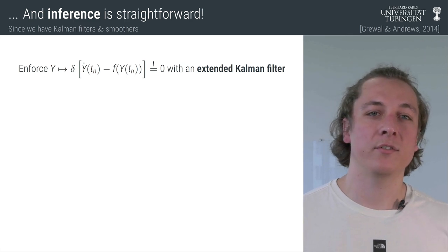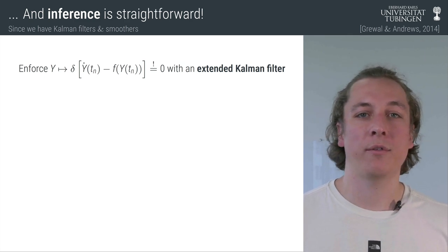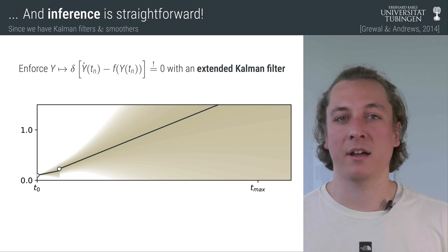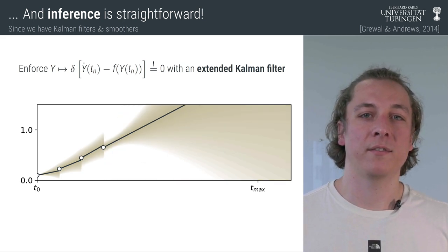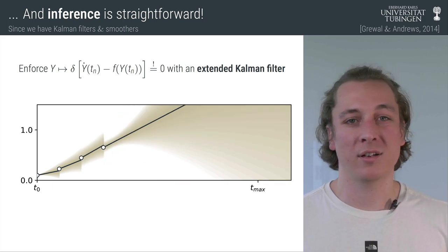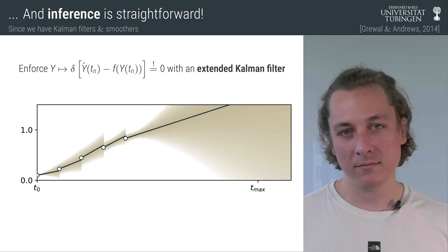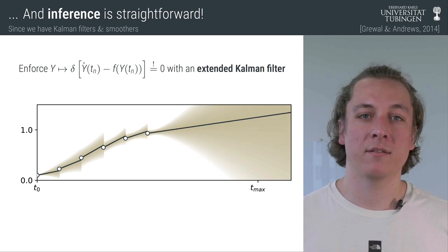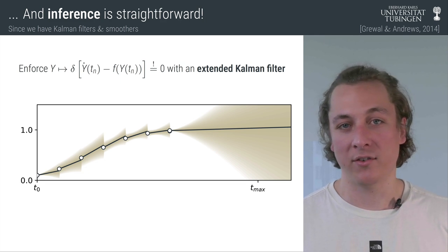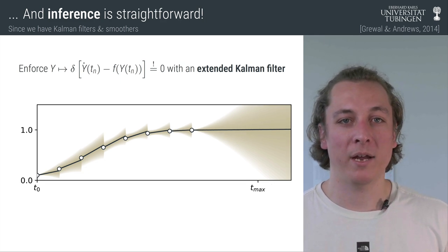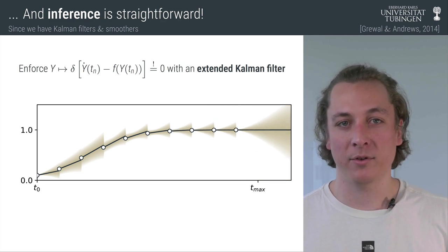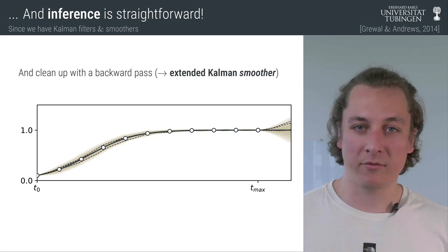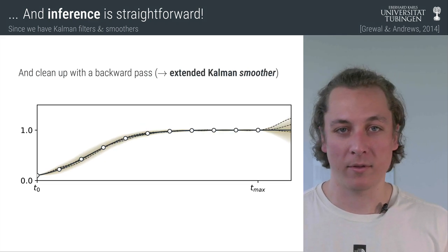We'll use an extended Kalman filter to iterate forward through time, grid point to grid point, and at each grid point we'll update the current belief on the fact that this discrepancy shall be as small as possible. By the time we reach the end of our time domain, we have recovered something that looks like the solution of the logistic ODE. We're only one backward pass away from having a full posterior with uncertainty intervals that we can sample from or do all sorts of other things with.